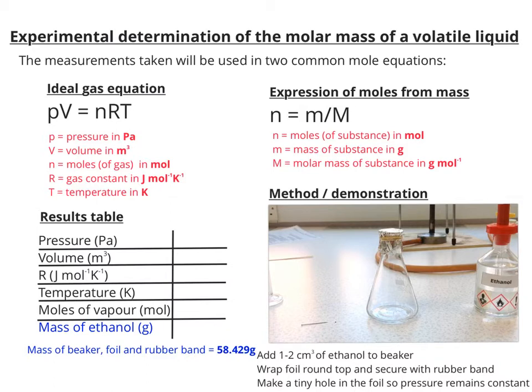Now I put the foil over the top because that's going to be my lid. The foil will also tend to reflect heat back down into the liquid rather than let it escape. I'm going to seal it with a rubber band to keep it in place. Then using a pin, I can make a tiny hole in the top, and that hole can ensure that the pressure remains constant throughout.